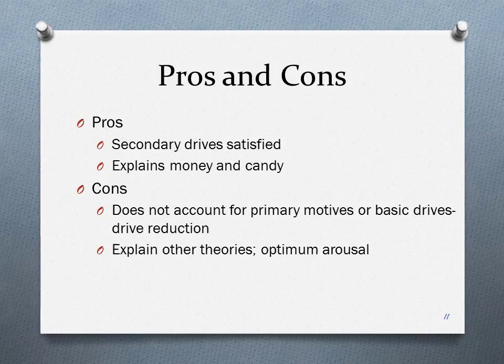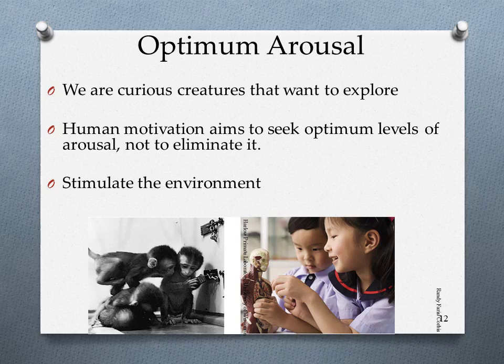Optimal arousal is the fourth idea. We are curious creatures who want to explore, and sometimes we don't do things for money or personal enjoyment. Some things we do to get rid of boredom. Human motivation aims to seek optimal levels of arousal — we want to be excited and happy. In a stimulated environment, we might seek things like jumping out of planes.